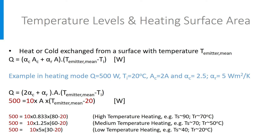So, the lower the temperature of the radiator, the higher the needed surface area. The temperature levels given here correspond to what we call high temperature heating, medium temperature heating, and low temperature heating. In low temperature systems, in general, floor heating is applied in order to have enough heat exchange surface area.